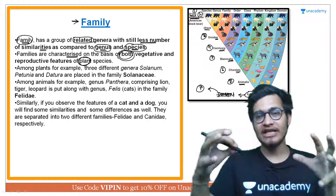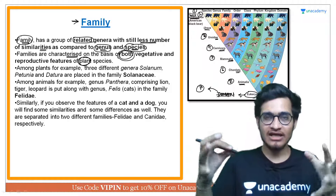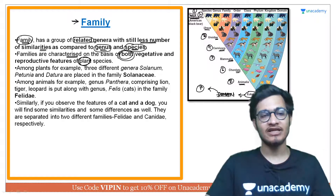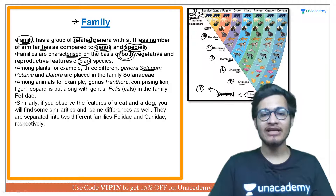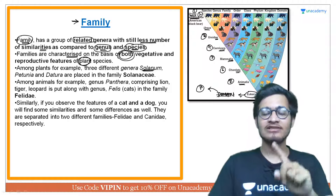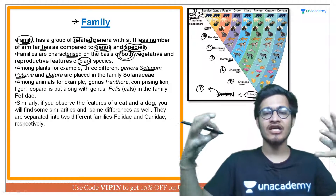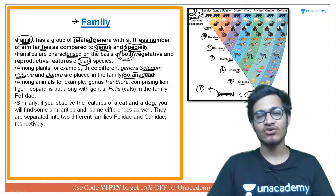Related genera are grouped together and placed in the same family. So Solanum, which is the genus of potato and brinjal, is related to Petunia and Datura. All three of these were grouped together and placed in one family — that is Solanaceae.